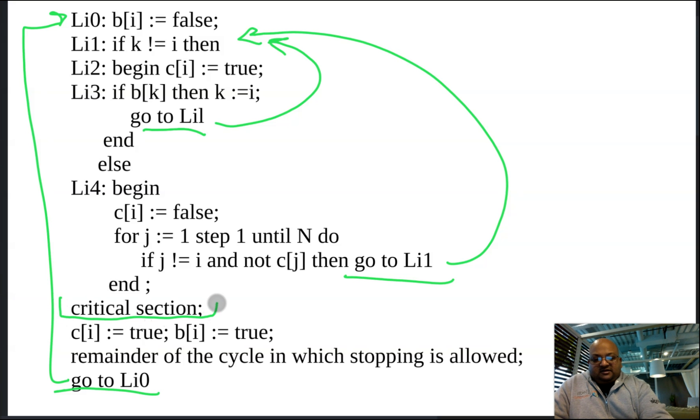Now here is the critical section, and that's the piece we want to make mutually exclusive. Now let's try to see what is happening here and if we can make this code a little bit more understandable.